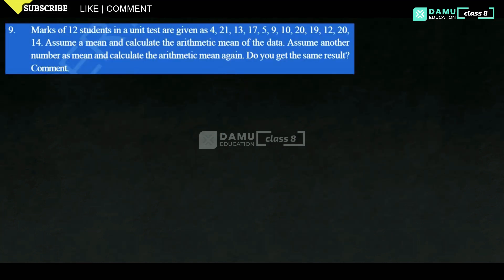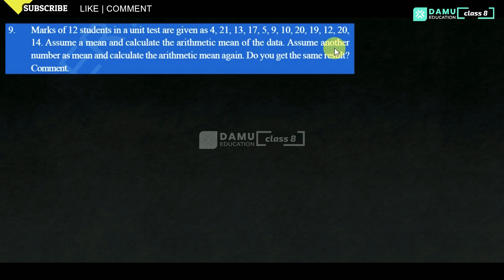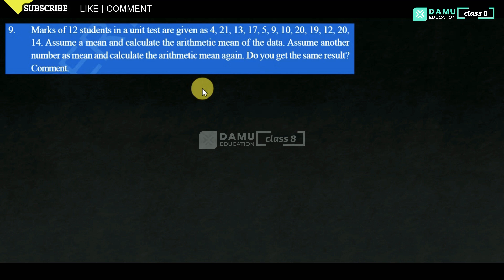In this module, we are going to discuss the ninth question. Marks of 12 students in a unit test are given. Assume a mean and calculate the arithmetic mean of the data. Assume another number as mean and calculate the arithmetic mean again — do you get the same result? I think we will get the same result, because arithmetic mean will not change by the deviation value.